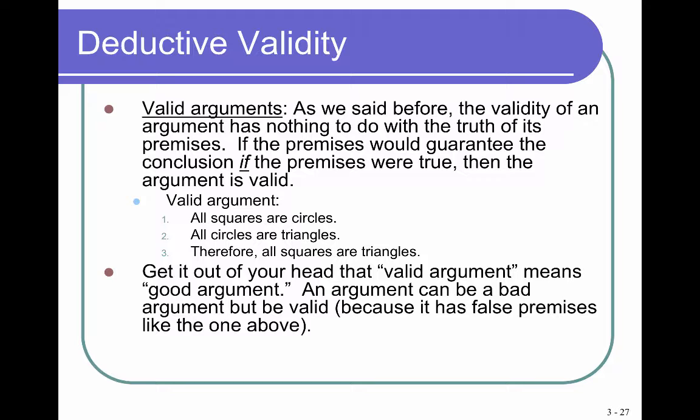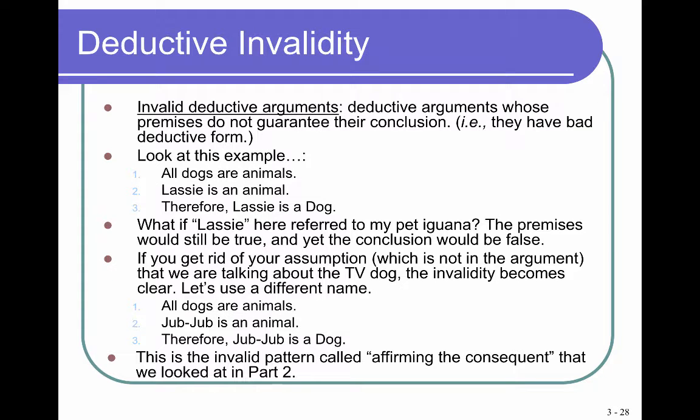I cannot stress this enough — validity is not truth. This argument has false premises and a false conclusion, but it is valid. So what is an invalid deductive argument? We looked at a couple in part two: the denying the antecedent and affirming the consequent patterns. It's basically when they have bad deductive form and so the premises do not guarantee the conclusion.